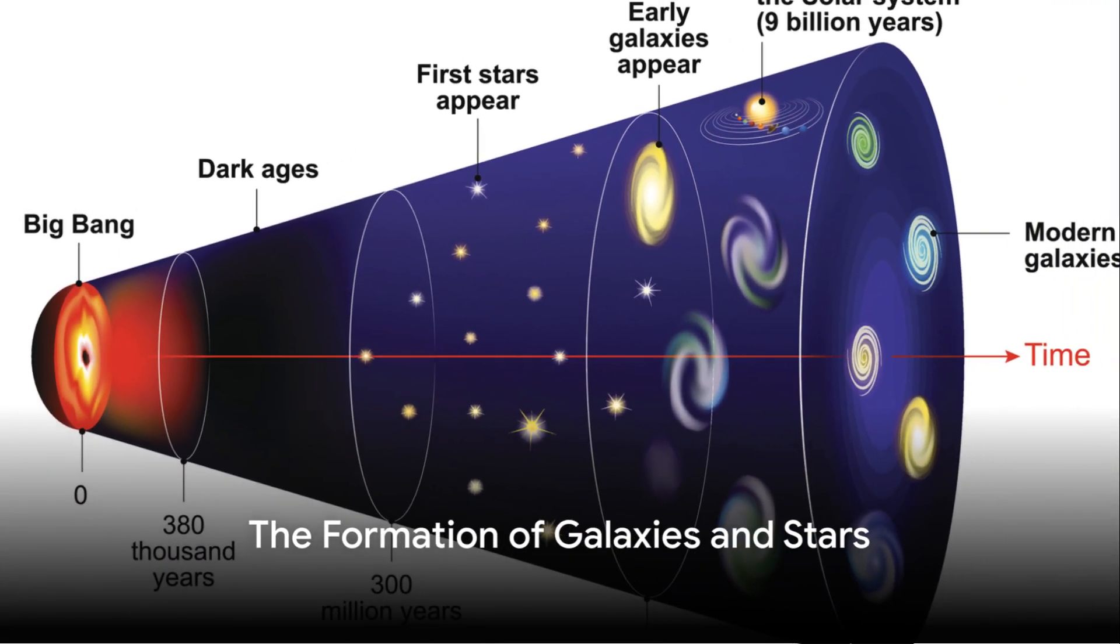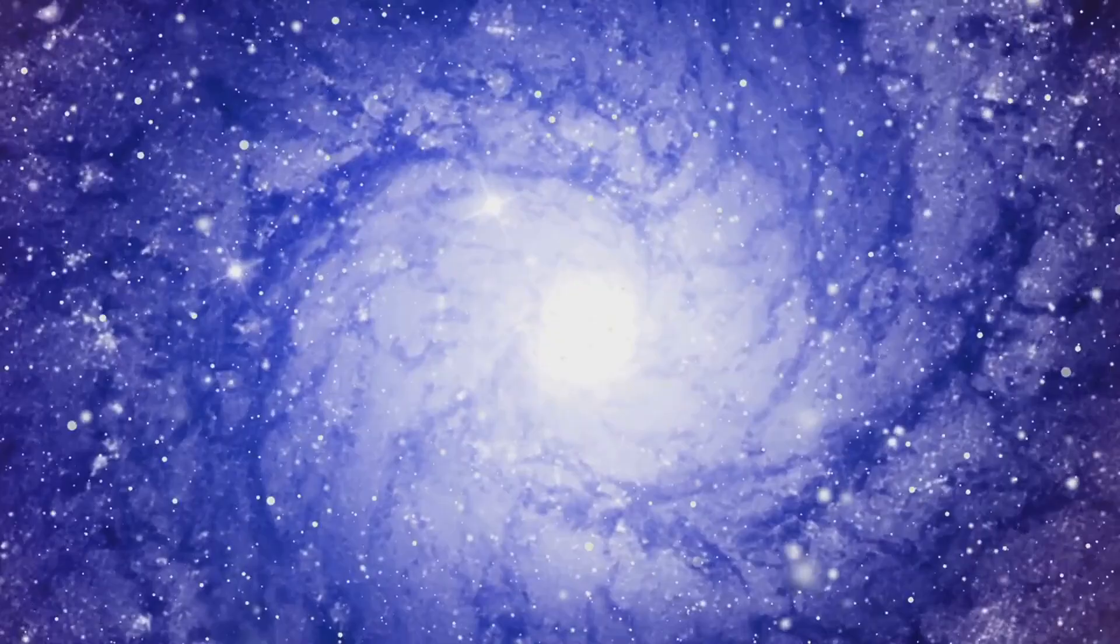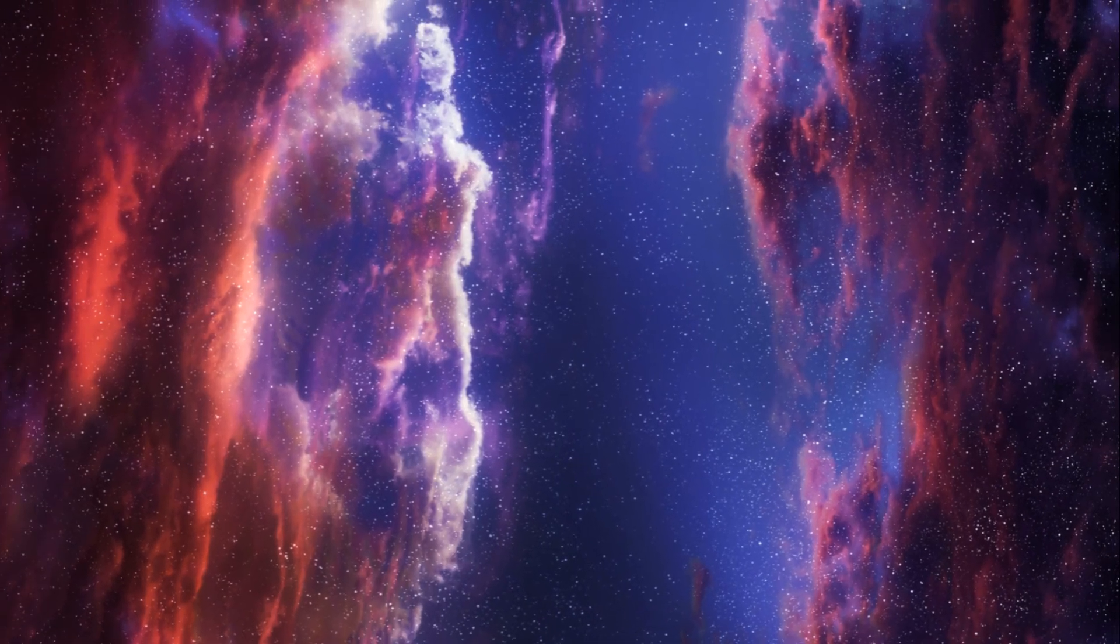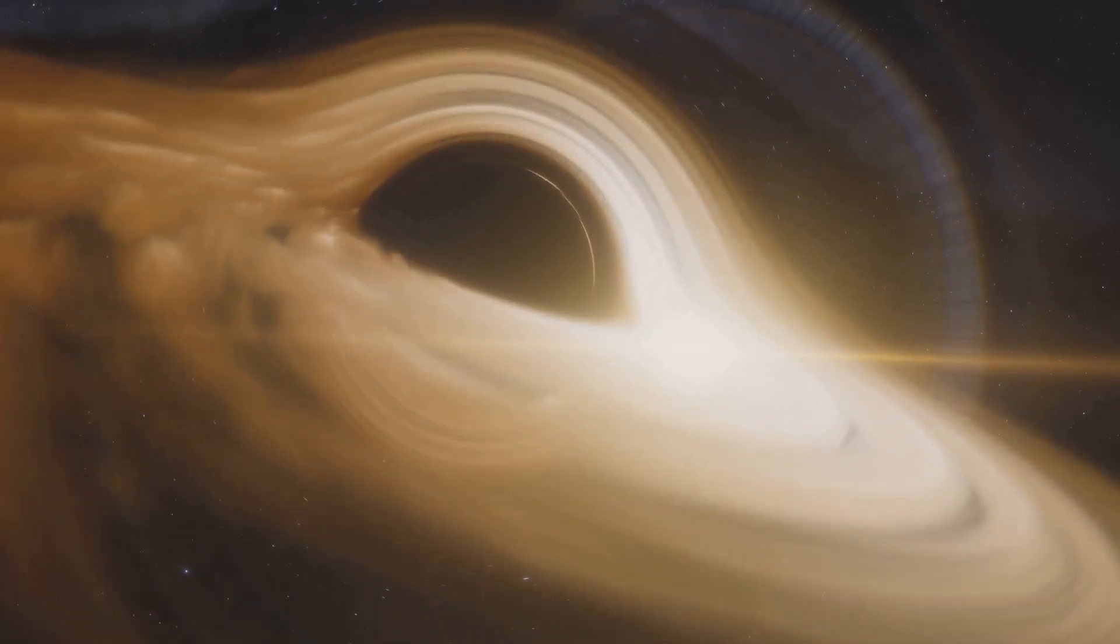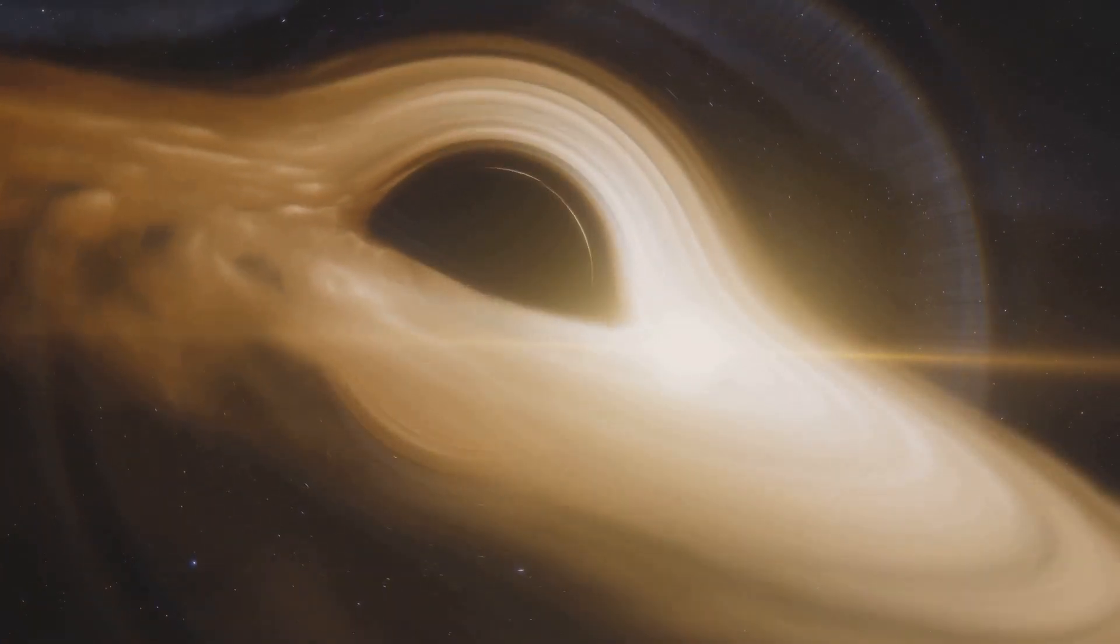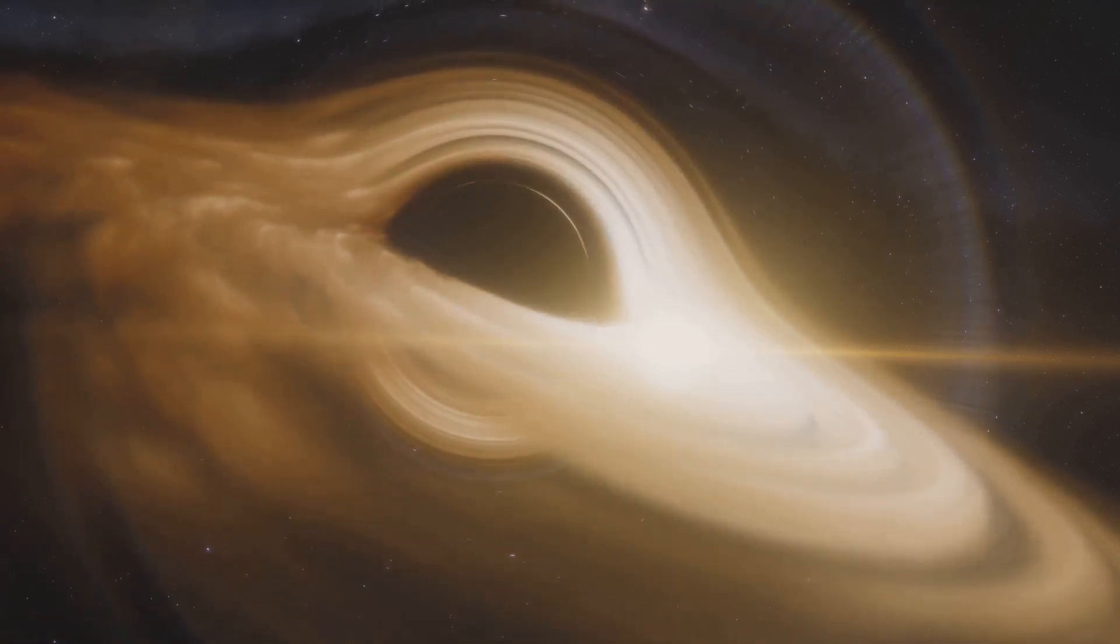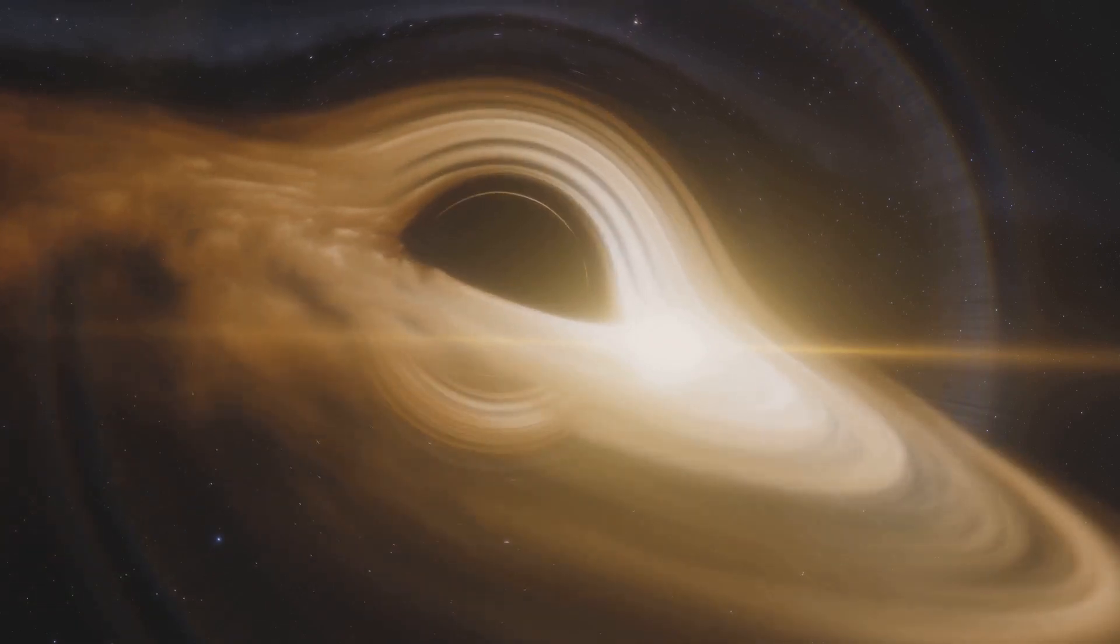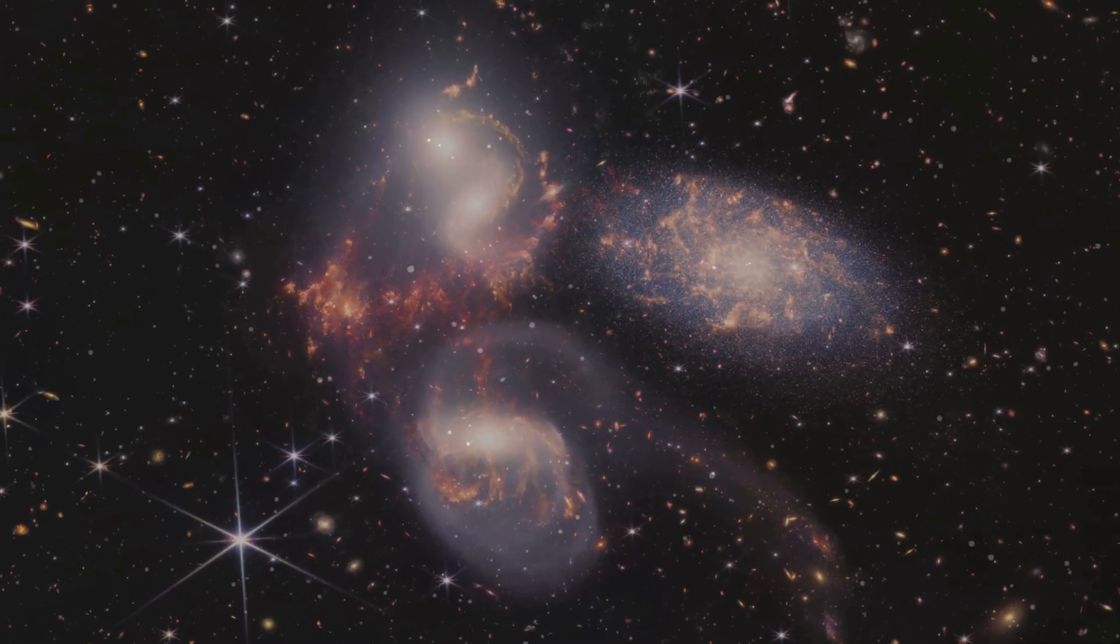In the aftermath of the Big Bang, the universe continued to expand and cool, setting the stage for the creation of galaxies and stars. This cool down allowed matter to begin to coalesce. Over hundreds of millions of years, gravity started to pull this matter together, forming a cosmic web of gas and dark matter. Within this cosmic web, dense regions began to collapse under their own gravity, creating pockets of intense heat and pressure. These pockets are the birthplaces of galaxies.